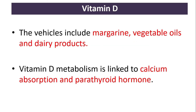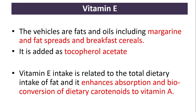For vitamin D, the vehicles include margarine, vegetable oils, and dairy products. Vitamin D metabolism is linked to calcium absorption and parathyroid hormone. For vitamin E, the vehicles are fats and oils including margarine, fat spreads, and breakfast cereals. Vitamin E intake is related to total dietary intake of fat, and it enhances the absorption and bioconversion of dietary carotenoids to vitamin A.